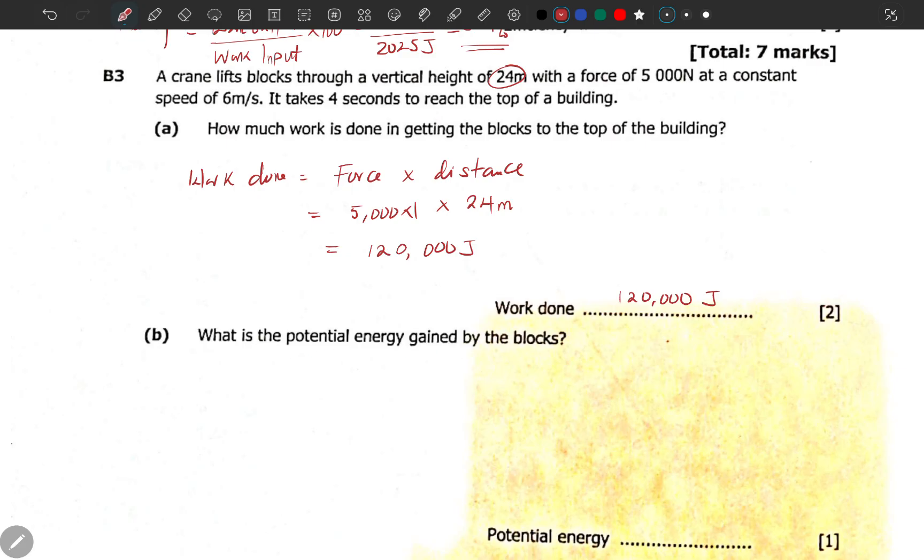What's the potential energy gained by the blocks? Remember that this is a height. The height is 24 meters, and potential energy is the energy possessed by an object due to its position. Because it is due to its position, the entire work done is just equal to the potential energy. Even here, the potential energy is 120,000.